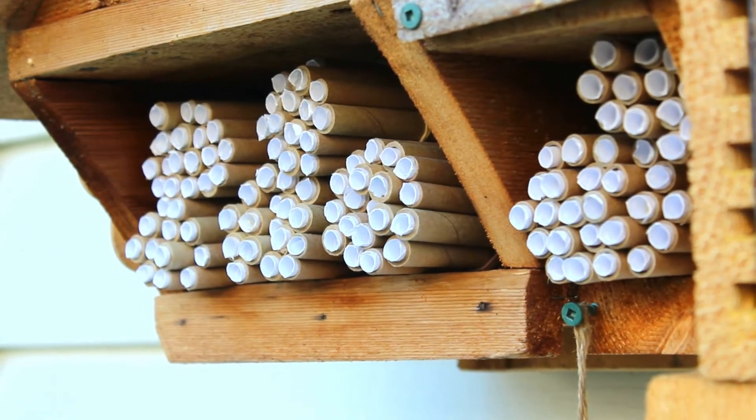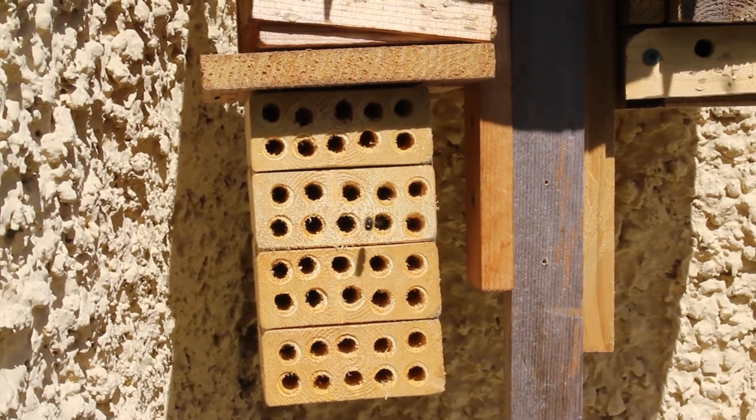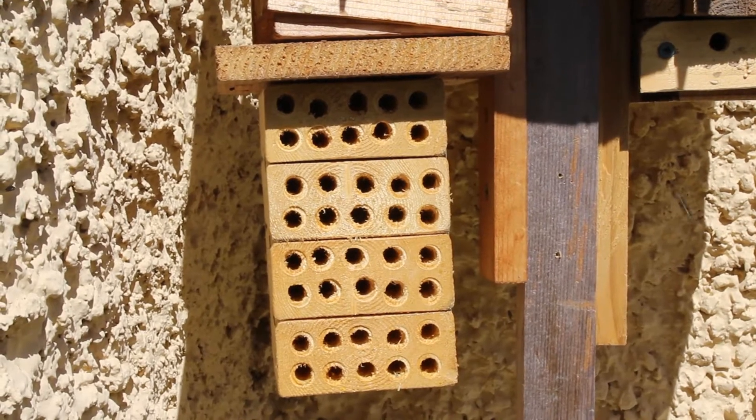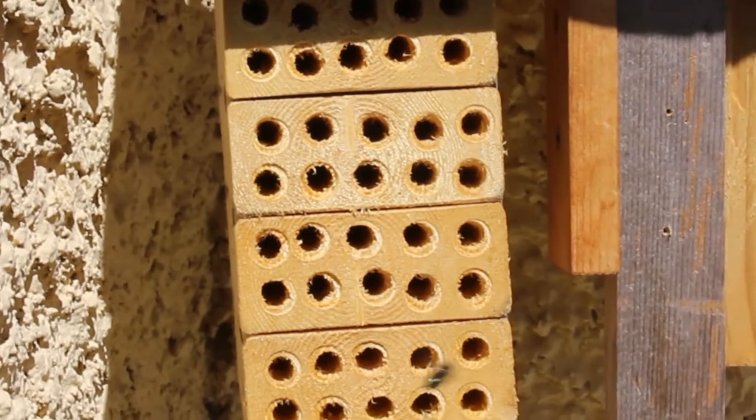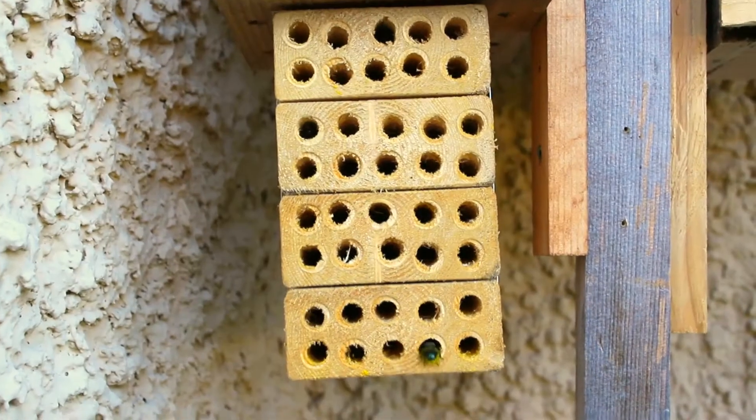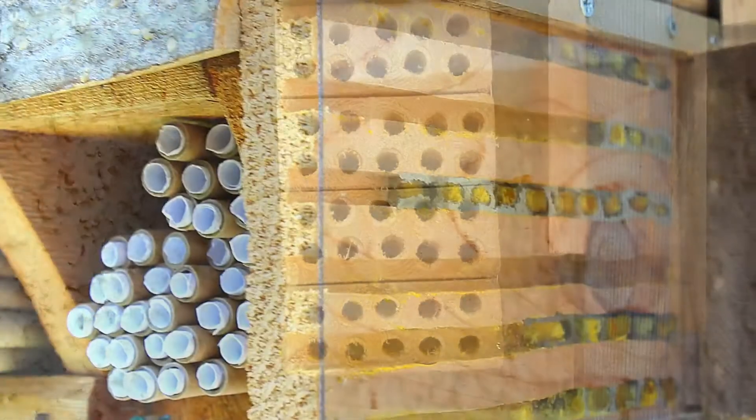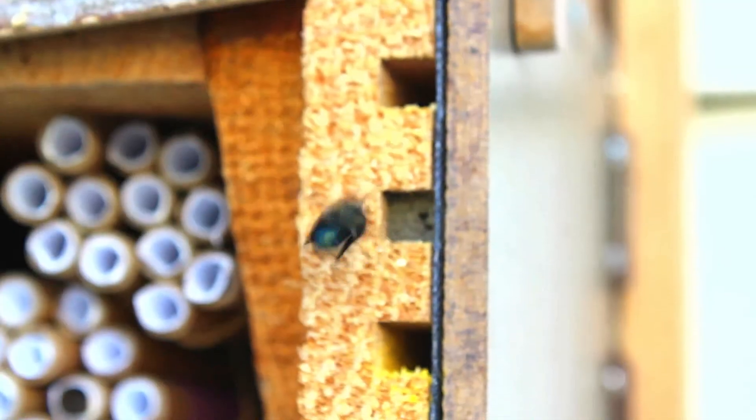Once a tube has been selected, the bee will begin creating a pollen bundle mixed with nectar. This bundle will require approximately 25 foraging trips to various flowers around the neighborhood. When the pollen ball is big enough, the bee will lay a single egg on top of the bundle. The egg will be small, white, and semi-translucent, similar to a tiny grain of rice.